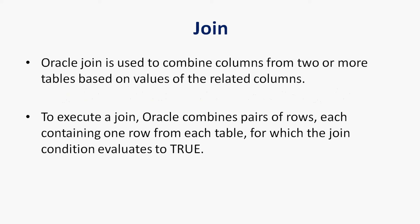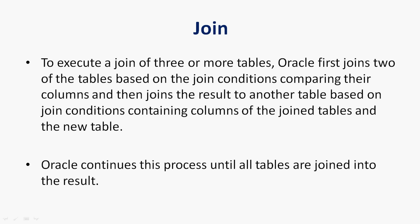Oracle JOIN is used to combine columns from two or more tables based on values of the related columns. To execute a join, Oracle combines pairs of rows — each containing one row from each table — for which the join condition evaluates to true. To join three or more tables, Oracle first joins two tables, then joins the result to another table, continuing until all tables are joined into the result.